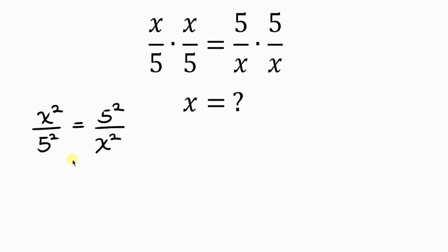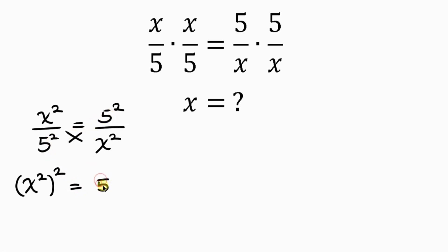Our next step will be to cross-multiply. So I'm going to cross-multiply like this, starting with the x. Because x squared times x squared is the same as x squared all raised to the 2. This is equal to 5 squared times 5 squared, which is also 5 squared all raised to the 2.